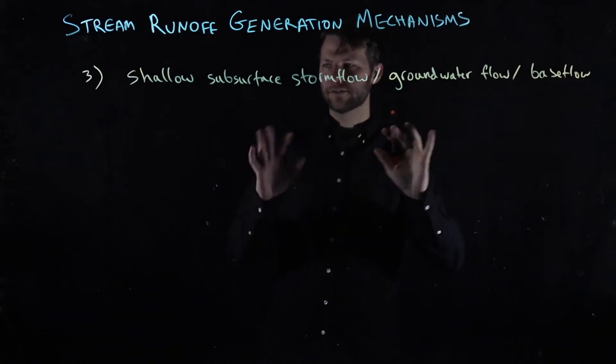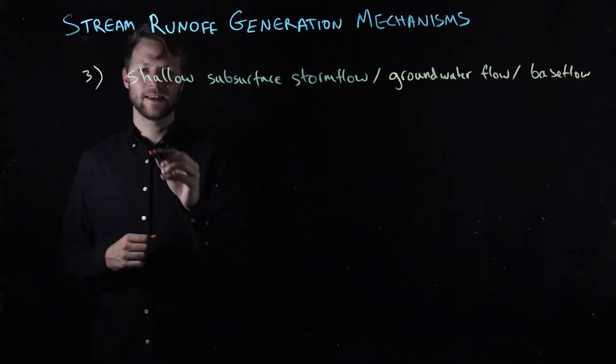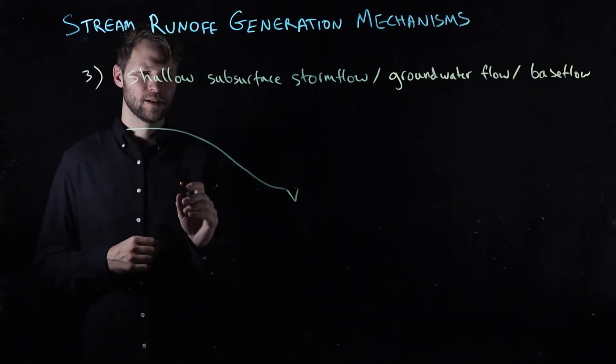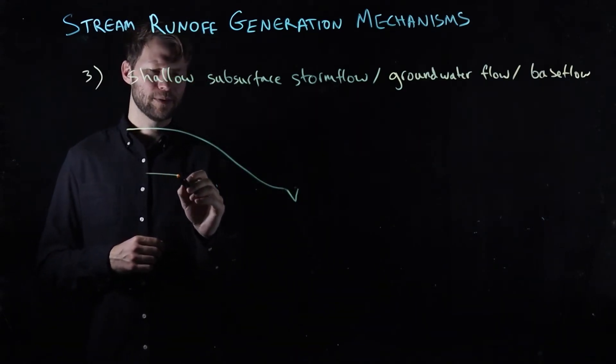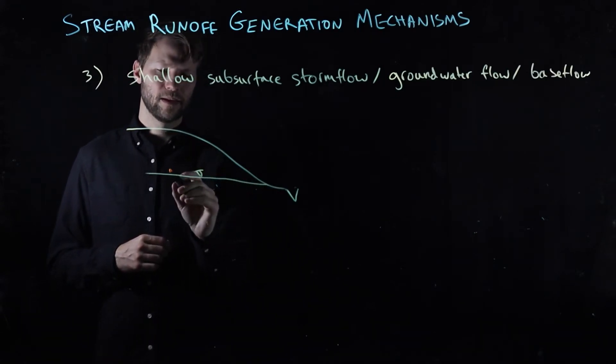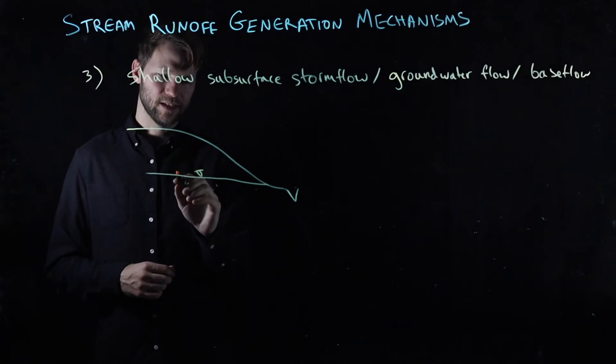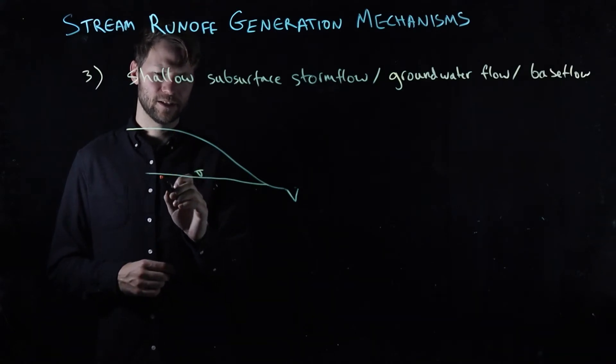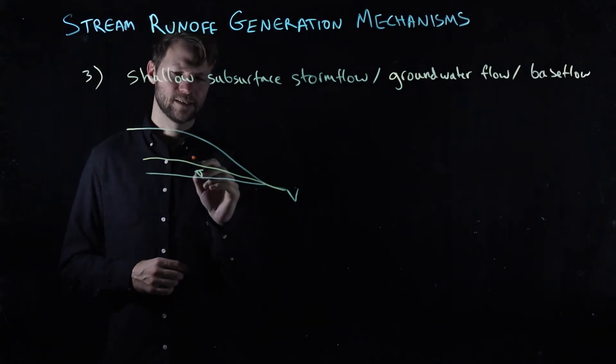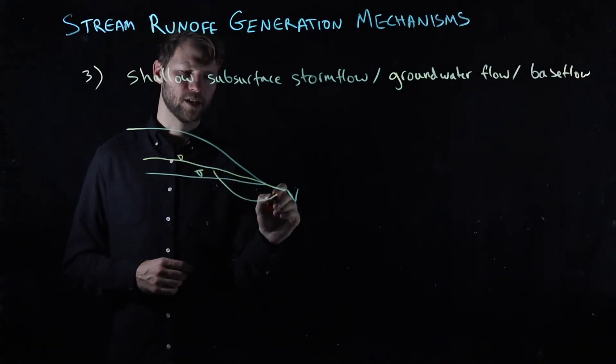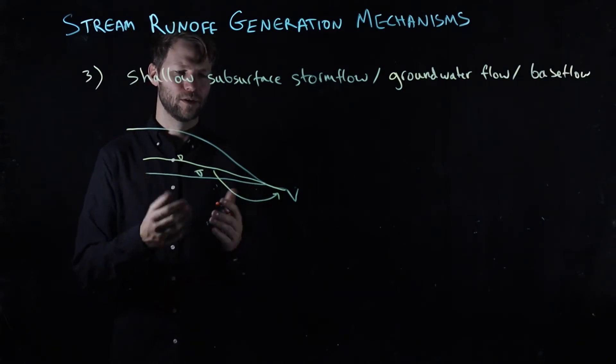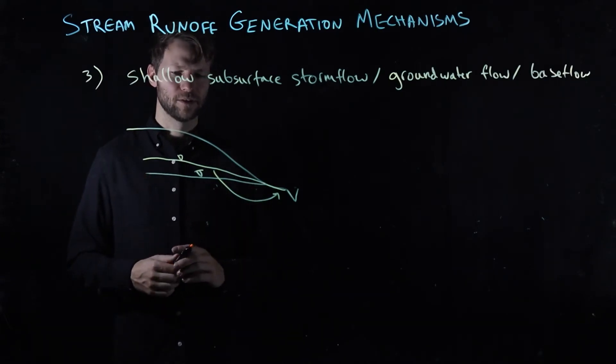They all refer to slightly different things, but the thing they have in common is if we consider, again, our hill slope cross section, what's happening is that there is a groundwater table that, in response to infiltrating water from the unsaturated zone, is rising to create an increased head gradient to deliver more water to the channel. So this is a basic groundwater flow or base flow scenario.